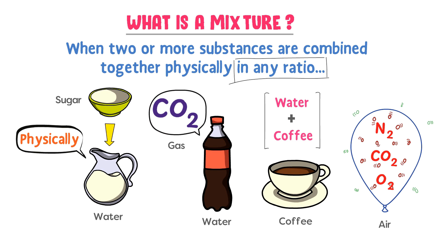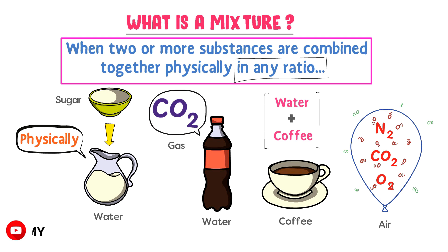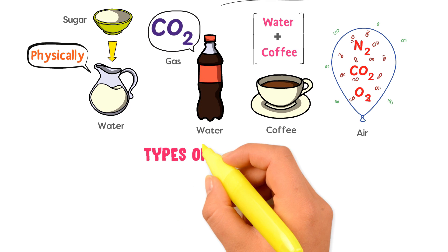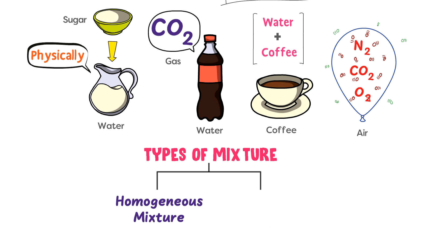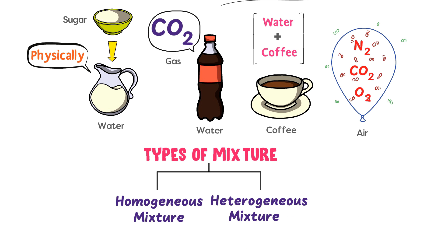We learn that when two or more than two substances are joined together physically in any ratio, we get a mixture. Now, what are the different types of mixture? There are two types of mixture: homogeneous mixture and heterogeneous mixture.